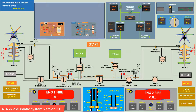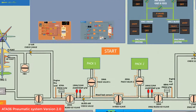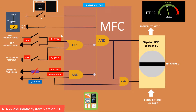Before we go to the full simulation, we need to know about the logic of the HP bar and bleed bar. The HP bar is controlled by the MSC. HP bar normally supplies 38 PSI on ground and 25 PSI in flight.